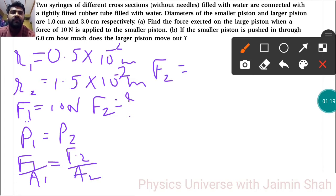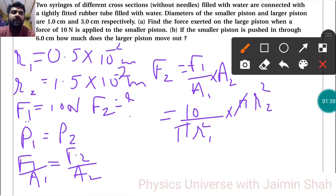Now F2 we have to find, so F2 is equal to F1 upon A1 into A2. Now by putting values, F1 is 10 Newton, A1 means π r1 square into π r2 square. Pi gets cancelled out, so r2 square upon r1 square, we will get F2 in Newton.